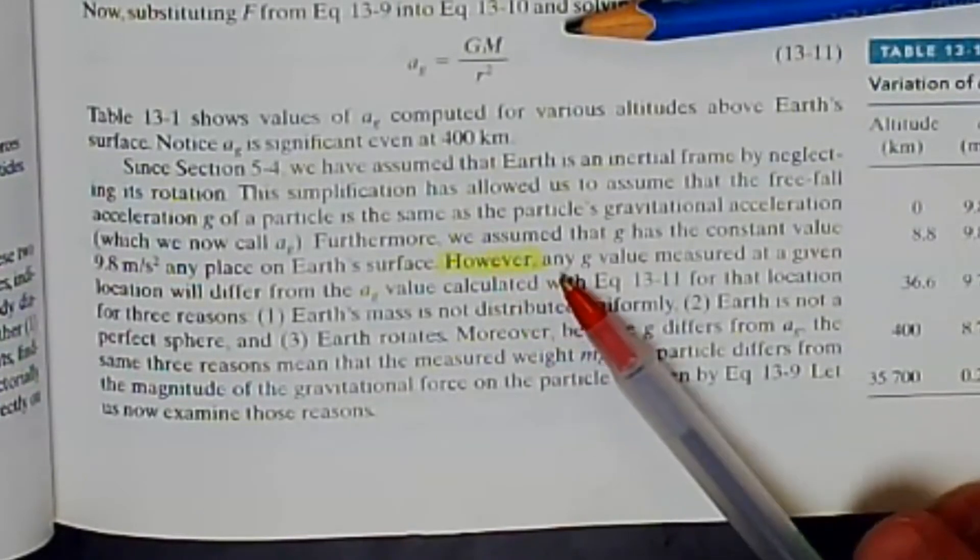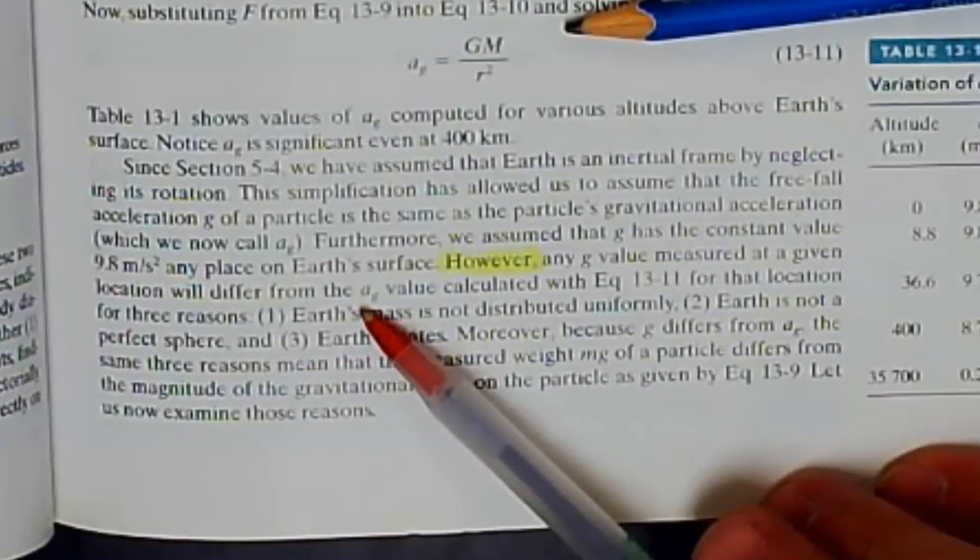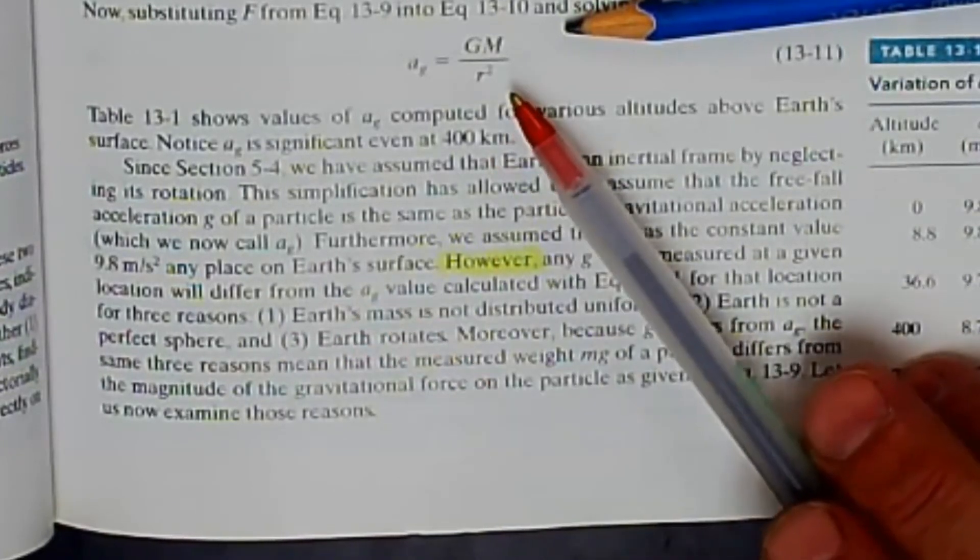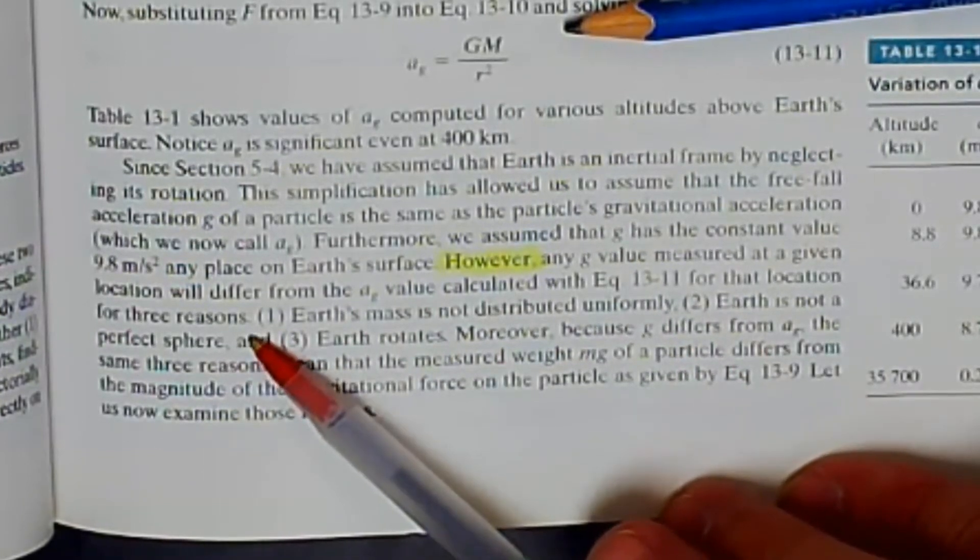However, any g value measured at a given location will differ from the a_g value calculated with Newton's universal law of gravitation for that location for three reasons.